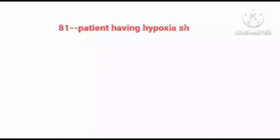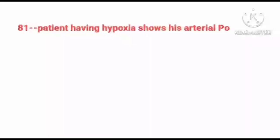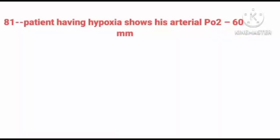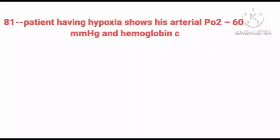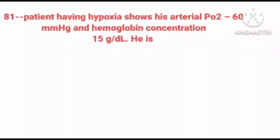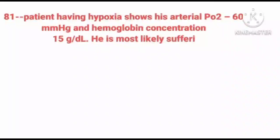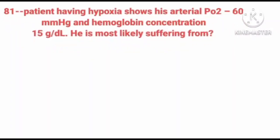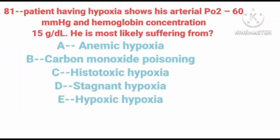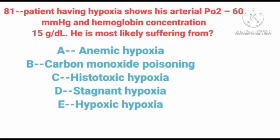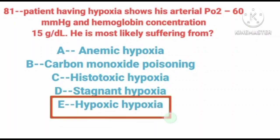Question number 81. A patient having hypoxia shows arterial partial pressure of oxygen 60 mmHg and hemoglobin concentration 15 gram per deciliter. He is most likely suffering from — correct answer is option E: hypoxic hypoxia.